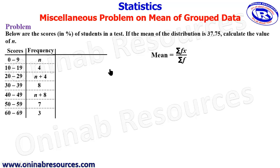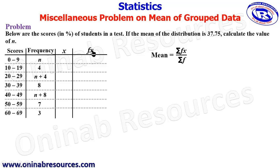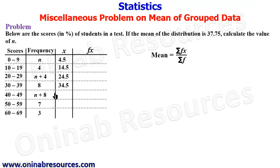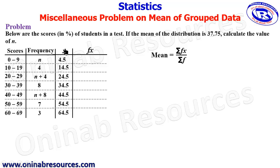We create two columns: x and fx. For x, we add the lower and upper limits of each interval and divide by 2. So: (0+9)/2 = 4.5, (10+19)/2 = 14.5, (20+29)/2 = 24.5, (30+39)/2 = 34.5, (40+49)/2 = 44.5, (50+59)/2 = 54.5, and (60+69)/2 = 64.5.